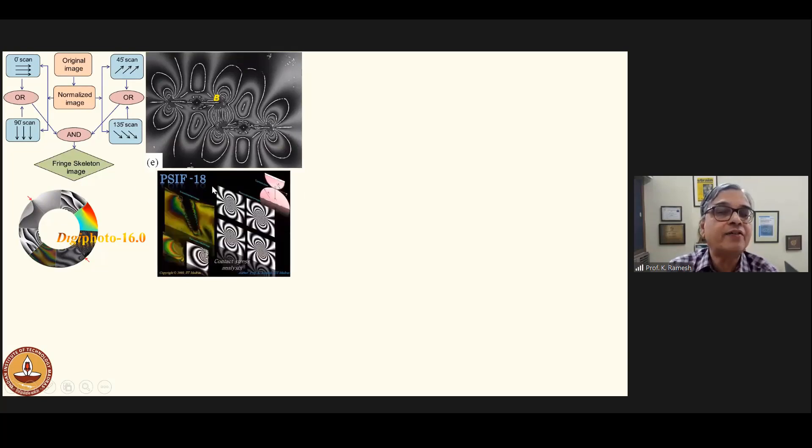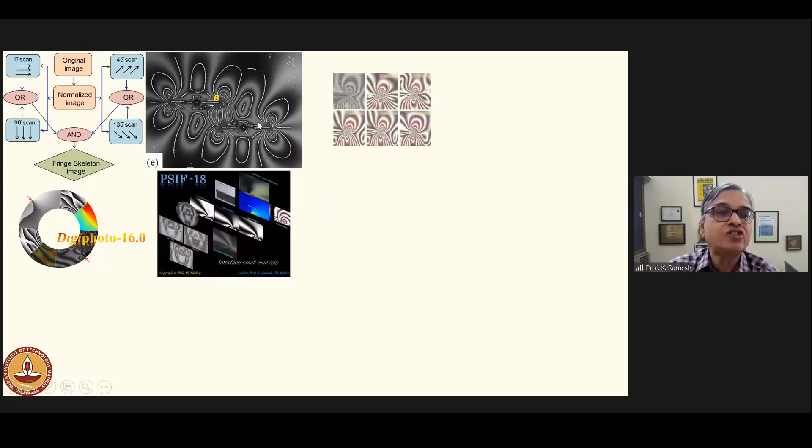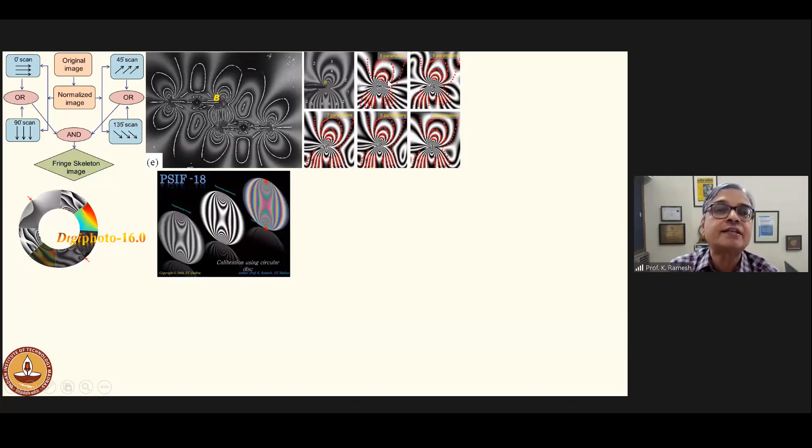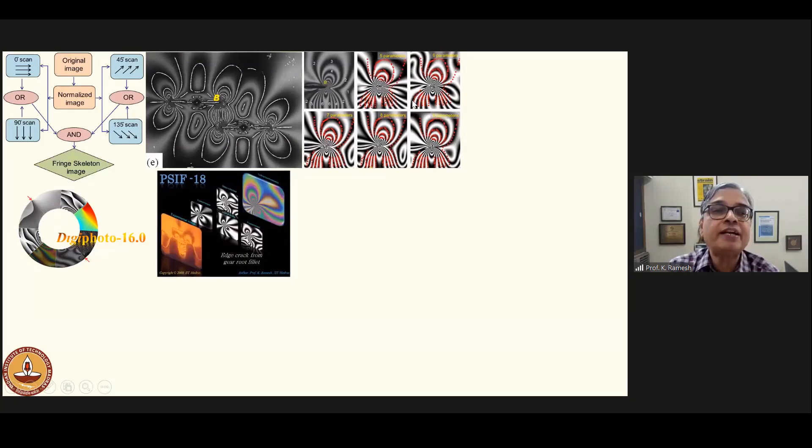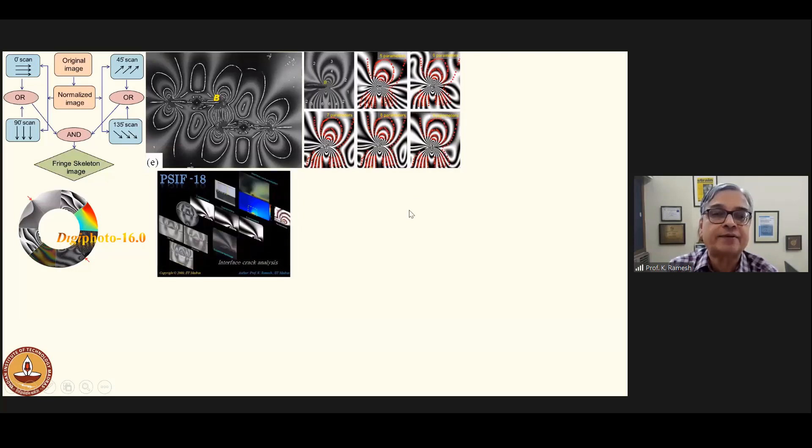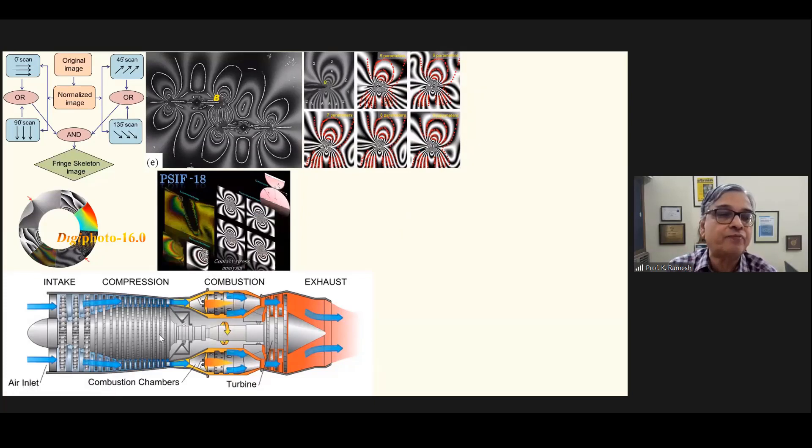This is achievable by our another software, TSAFE. What you can do is extract data from this experiment, which was shown as red dots. As the number of parameters are increased, the red dots closely match with the simulated fringe pattern.